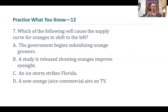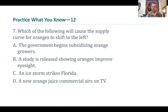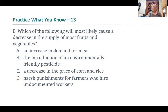Which of the following would cause the supply curve for oranges to shift to the left? We're looking for what would decrease overall supply of oranges. Subsidies actually encourage production, so that's not it. A study showing oranges improve eyesight would affect demand, not supply — that's a taste and preference factor. An ice storm striking Florida is a naturally occurring event that may take out a portion of the orange crop — this is a supply curve shifter and would shift it to the left because the weather event reduces the amount of oranges available.